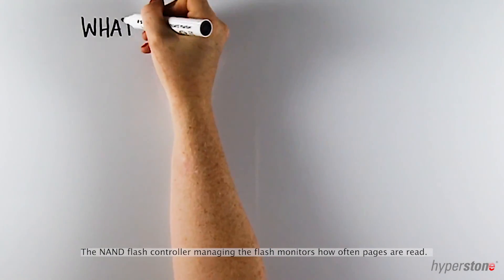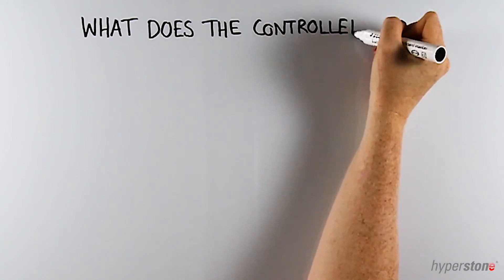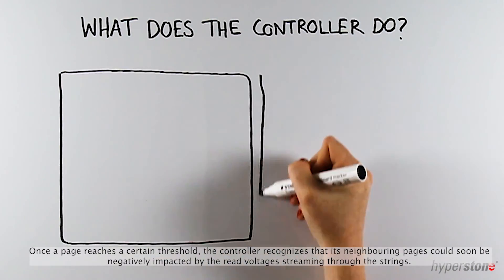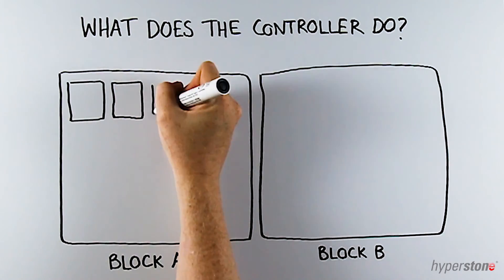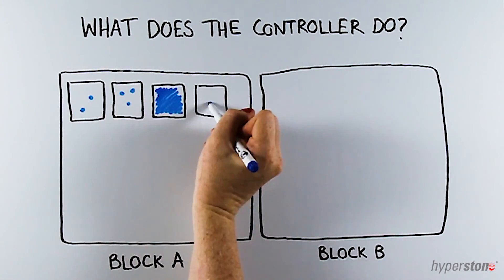The NAND flash controller managing the flash monitors how often pages are read. Once a page reaches a certain threshold, the memory controller recognizes that its neighboring pages could soon be negatively impacted by the read voltages streaming through the strings.